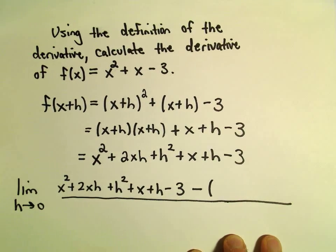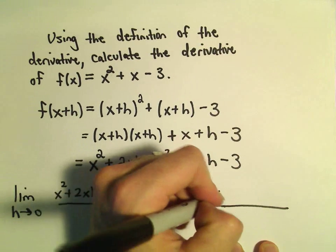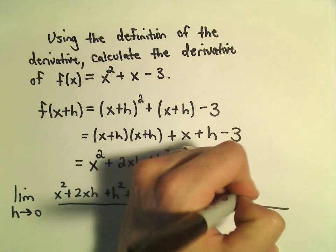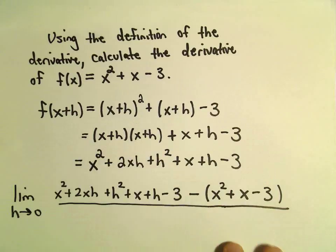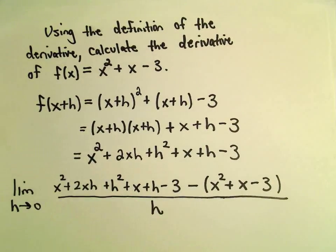So x squared plus 2xh plus h squared plus x plus h minus 3. And then we have to subtract away the original function, f of x, and that's just going to be x squared plus x minus 3. And then all of that is getting divided by h.